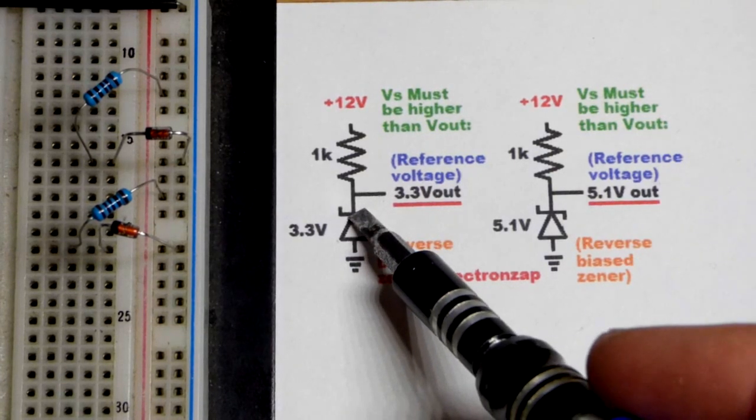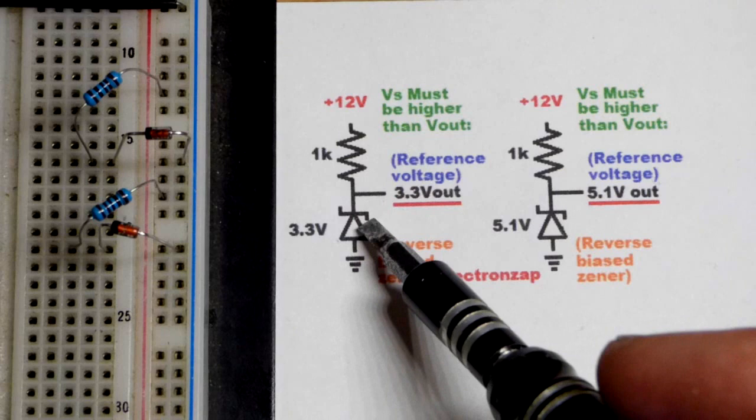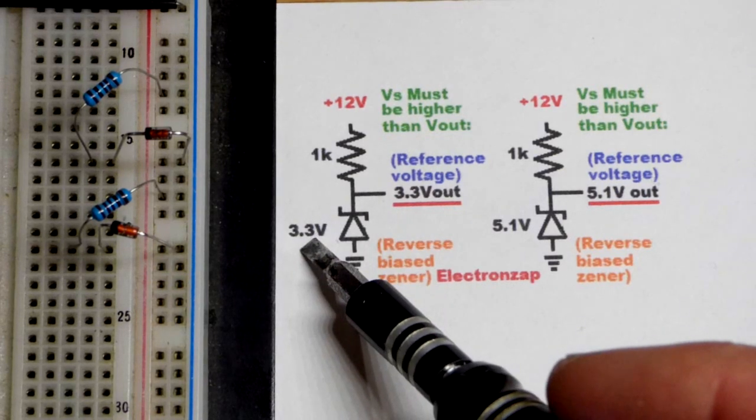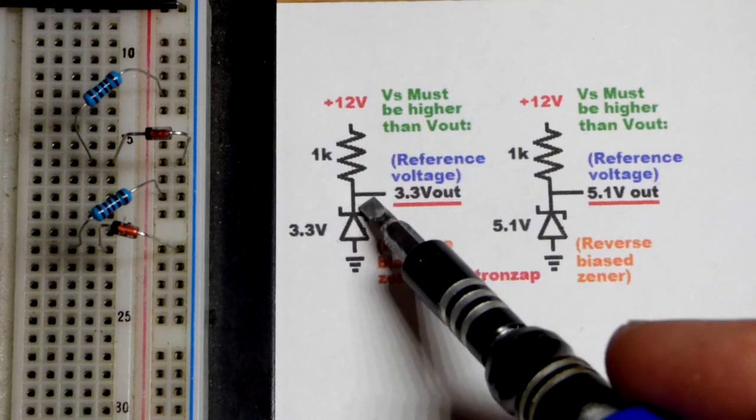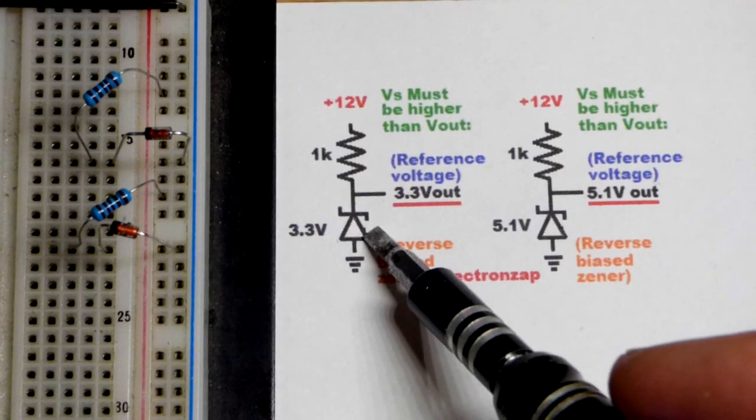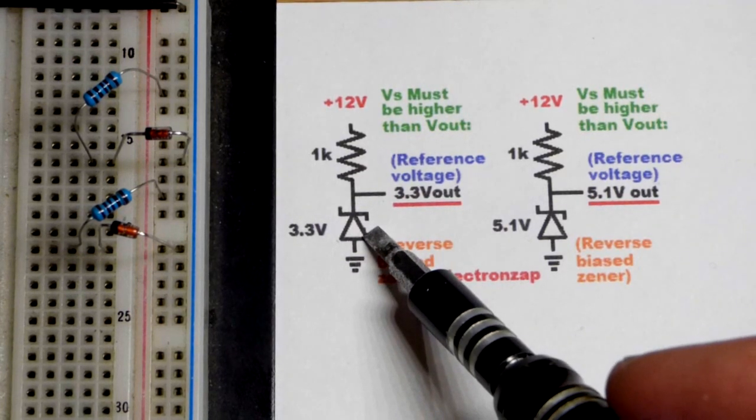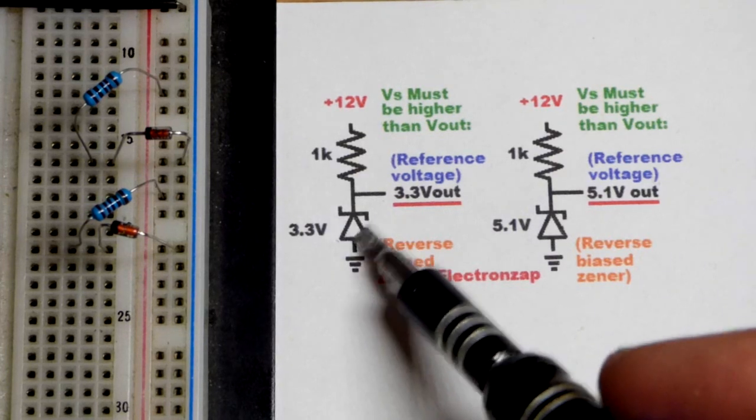So it is not intended to stop current while it's reverse biased. It has a Zener voltage which is a voltage that it will conduct while reverse biased, and the Zener diode can safely conduct while reverse biased. A lot of diodes cannot.